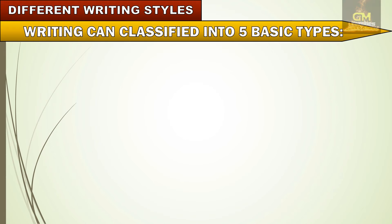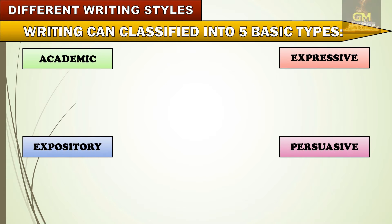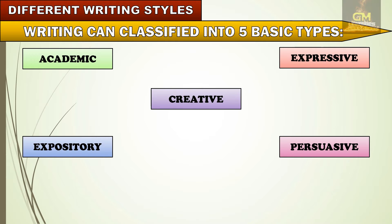Now, let's talk about different writing styles. Writing can be classified into five basic types, namely: academic writing, expressive writing, expository writing, persuasive writing, and of course, creative writing.